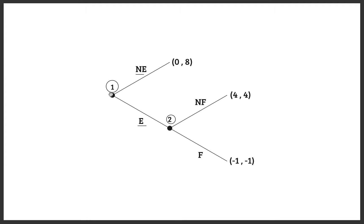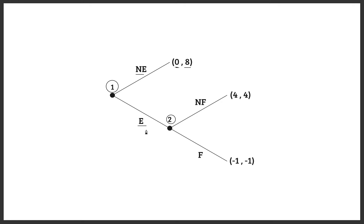If firm one decides not to enter the market, the payoffs will be: zero for player one, because that firm will not enter and will have no profits, and eight for player two. If firm one decides to enter, then we arrive at another decision node — player two or firm two needs to make another decision.